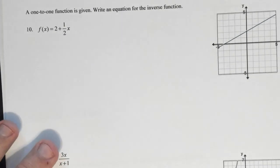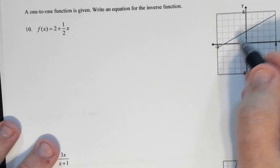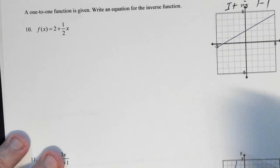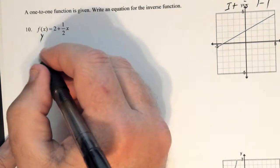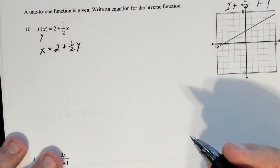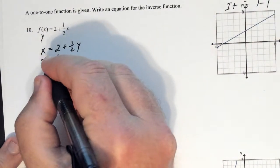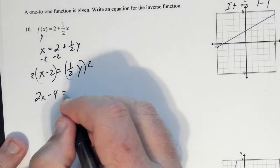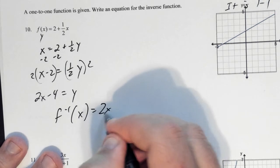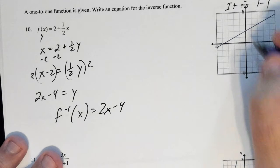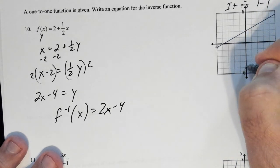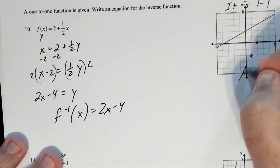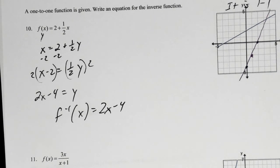For the linear example, this graph is one-to-one — any linear that isn't horizontal or vertical will be. Replace f(x) with y, then switch x and y to get x = (1/2)y + 2. Subtract 2 and multiply by 2: we get y = 2x − 4, so f⁻¹(x) = 2x − 4. You could also graph that: plot the y-intercept at −4 and use the slope of 2.